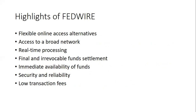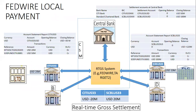Now let's take an example of how a FedWire local payment gets settled in the Federal CSM system. Consider that Company A Ltd is a corporate customer who holds an account at Citi US Bank, and they instruct the bank to make a payment of USD 20 million to a customer who holds an account at Standard Bank US.